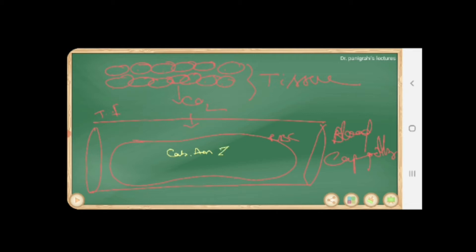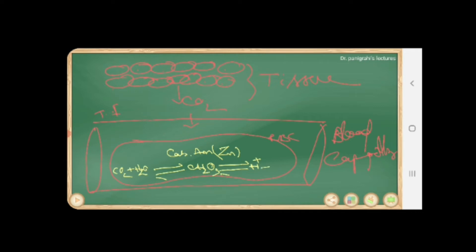Inside the blood capillary, RBCs produce the carbonic anhydrase enzyme. In the presence of carbonic anhydrase enzyme and the zinc metal, carbon dioxide reacts with water and produces carbonic acid (H2CO3).